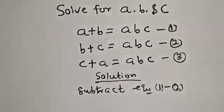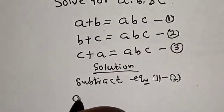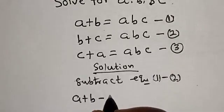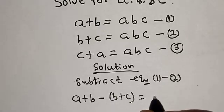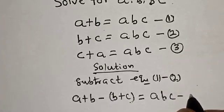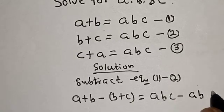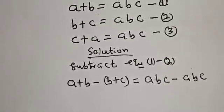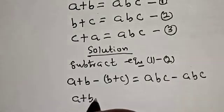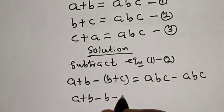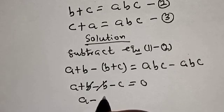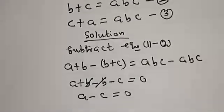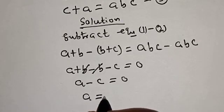Subtracting equation one from equation two: (a plus b) minus (b plus c) equals abc minus abc. This simplifies to a plus b minus b minus c equals zero. The b terms cancel, leaving a minus c equals zero, so a is equal to c.